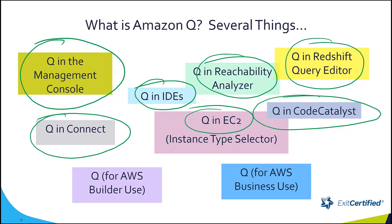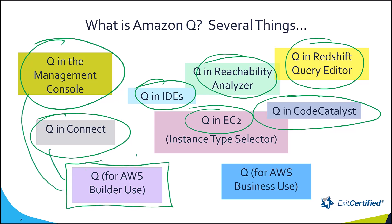Everything I've just rattled off falls under the general heading of Q for AWS builder use. All of these things are basically utilities built into AWS to help you and me use AWS better.